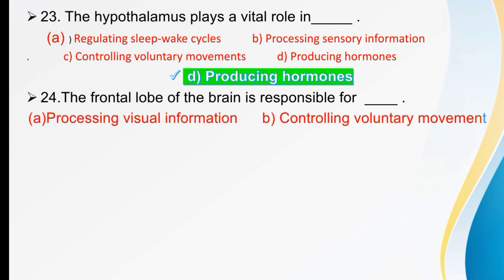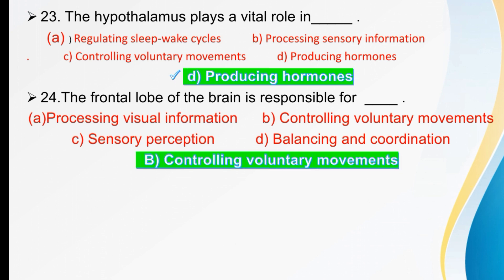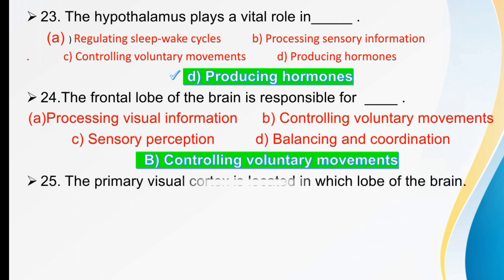The frontal lobe of the brain is responsible for dash. Options are processing visual information, controlling voluntary movement, sensory perception, or balancing and coordination. The frontal lobe of the brain is responsible for controlling voluntary movement. The right option is B.